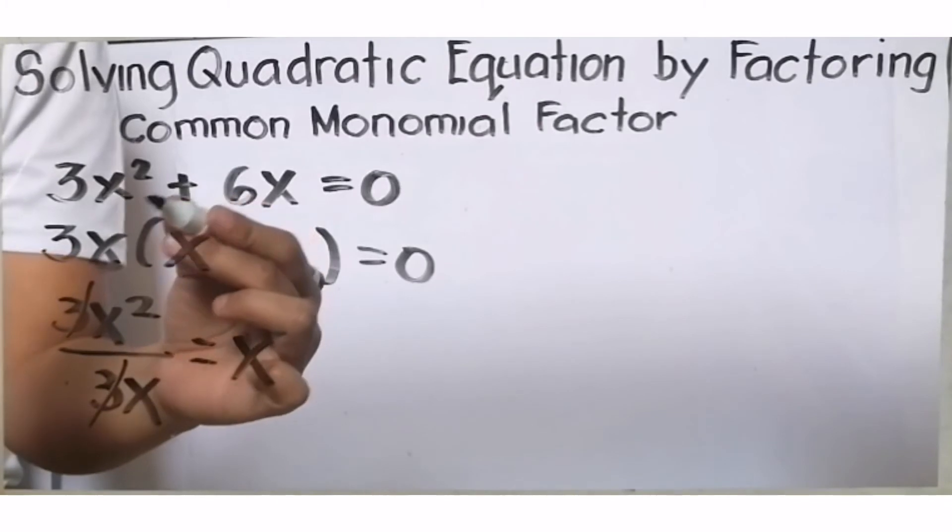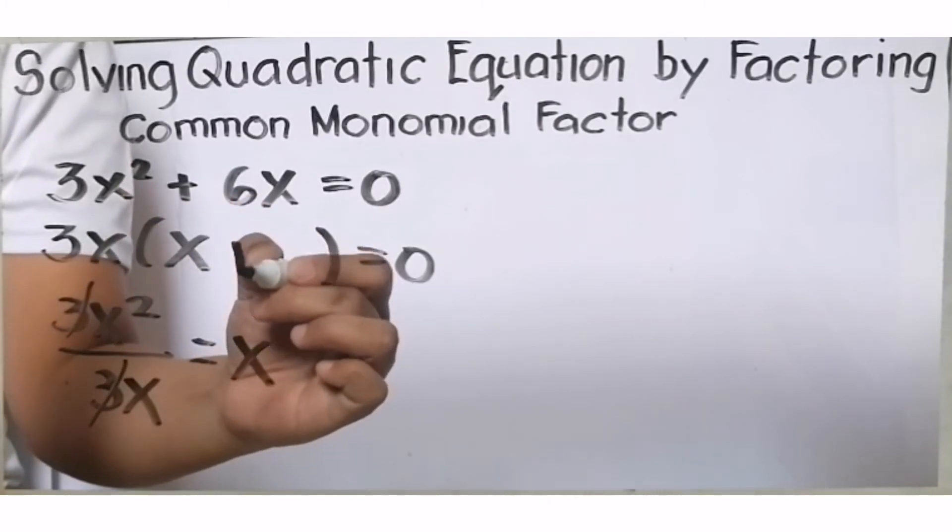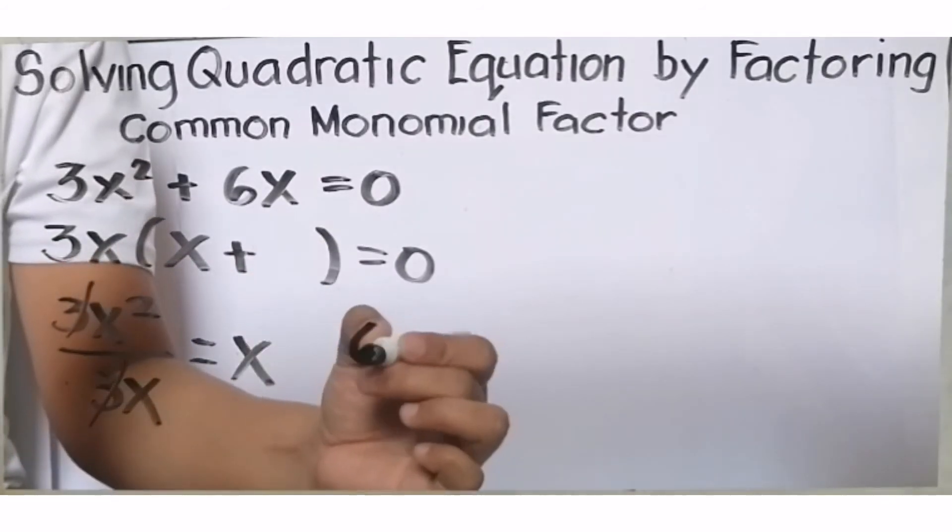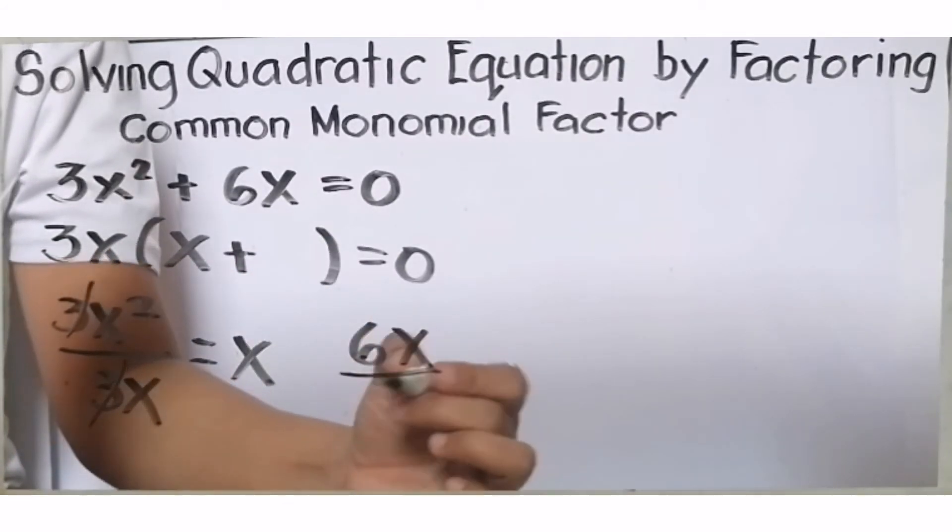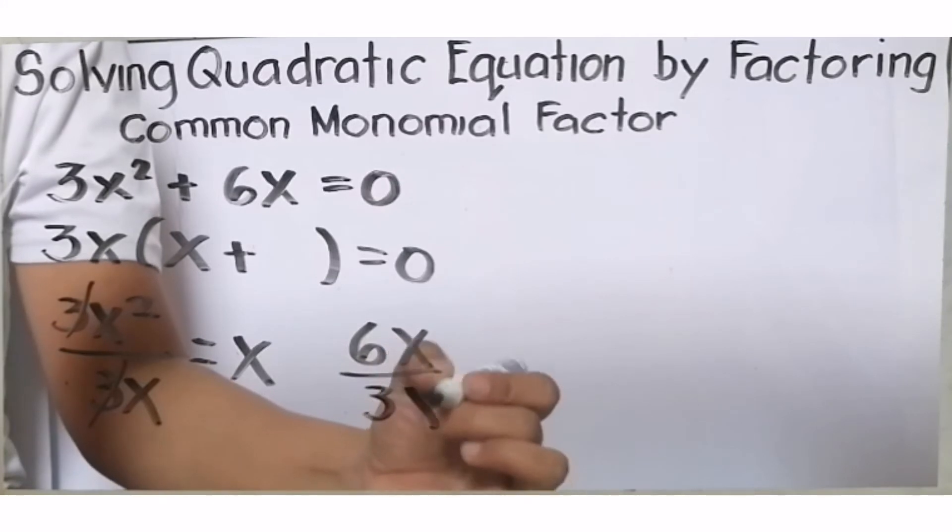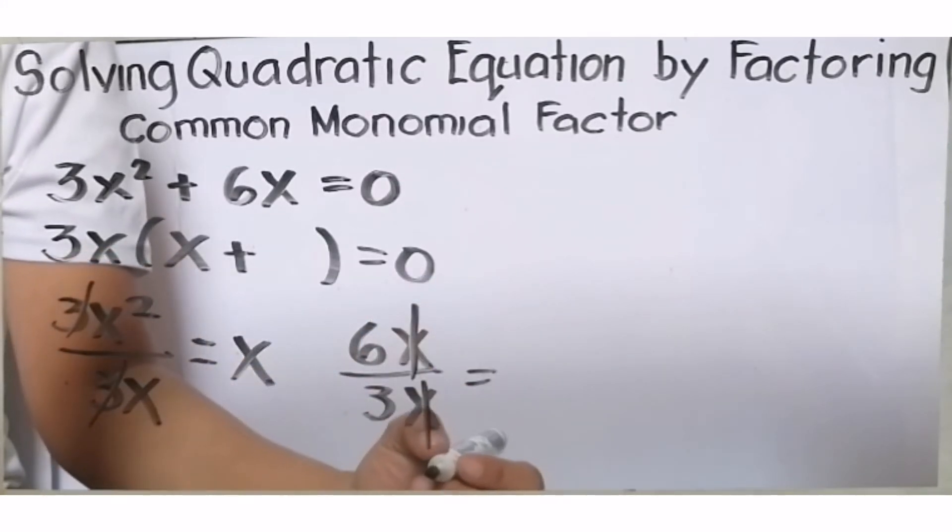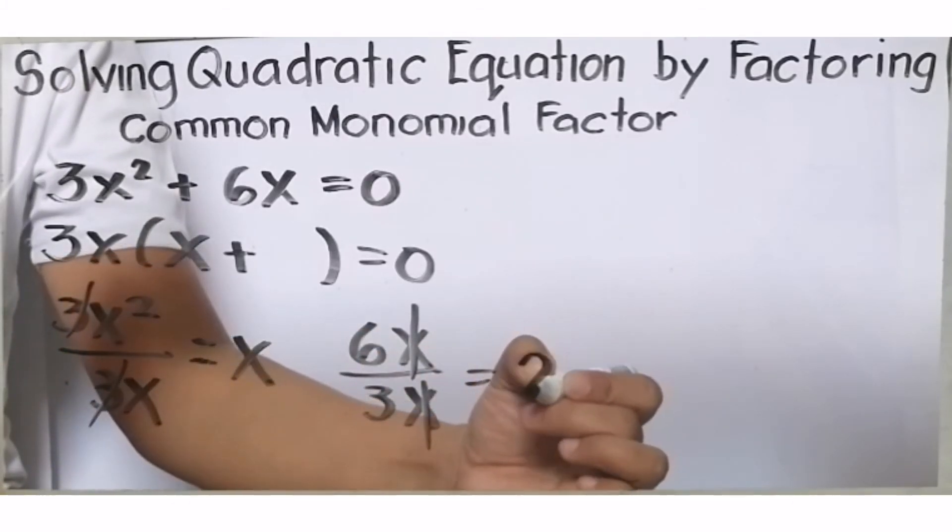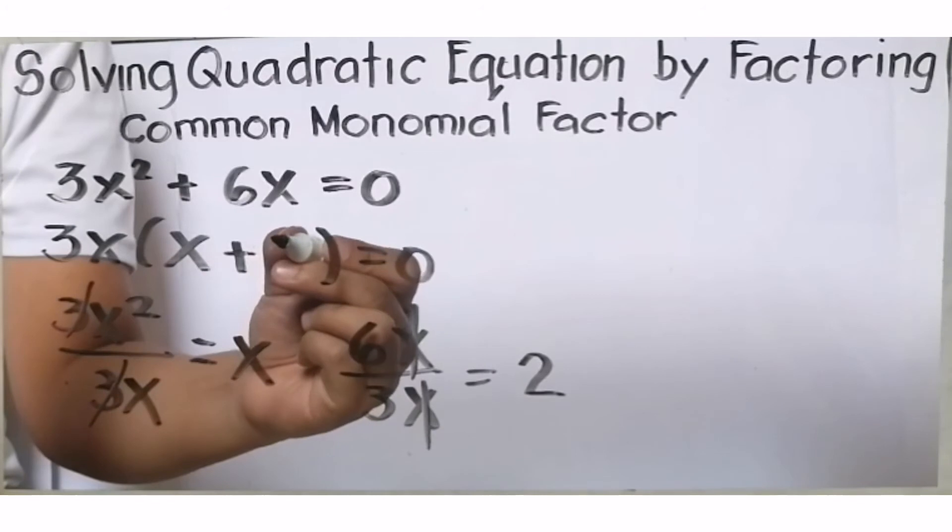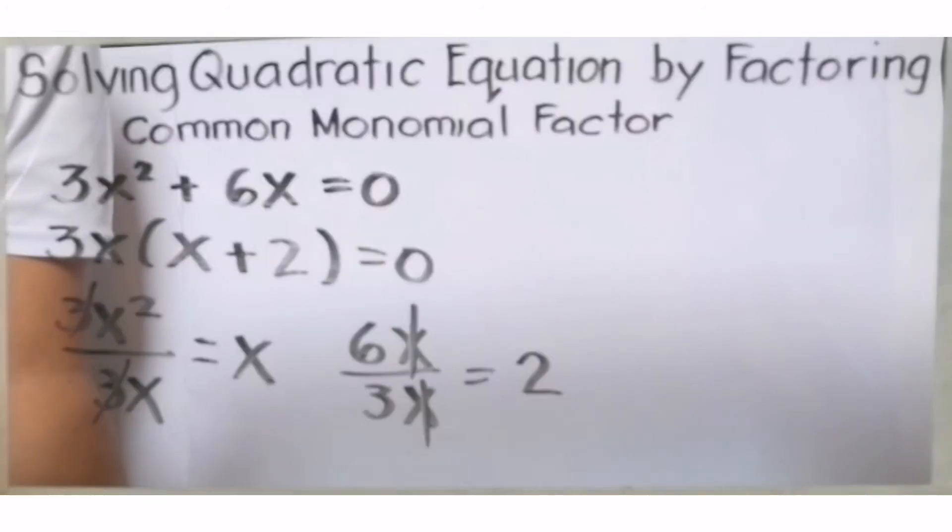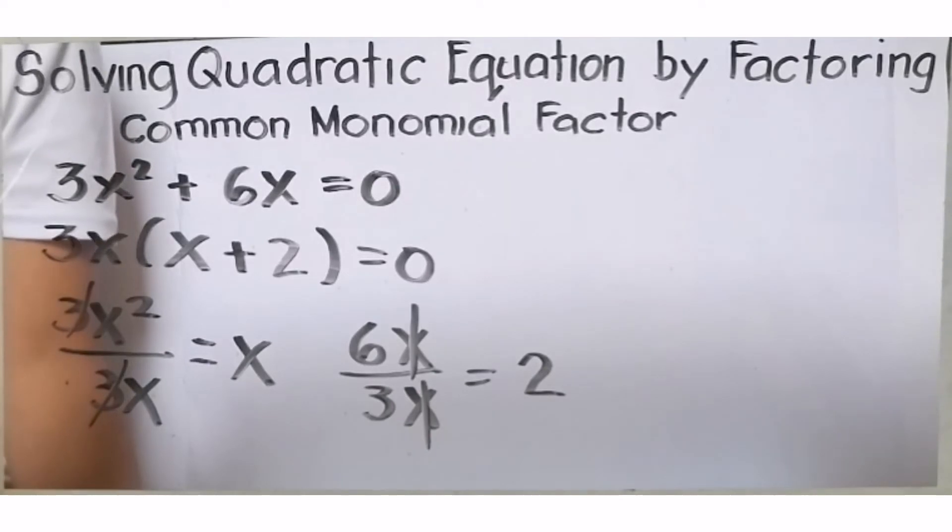Meron tayong maiiwang x sa loob ng ating binomial factor. And then, positive divided by positive is positive. Next, 6x divided by 3x. Sulat muna natin. 6x divided by 3x. X divided by x, cancel na, dahil ito ay equal to 1. 6 divided by 3, meron tayong 2. Meron pa tayong naiwang 2 dito sa loob ng ating parentheses.